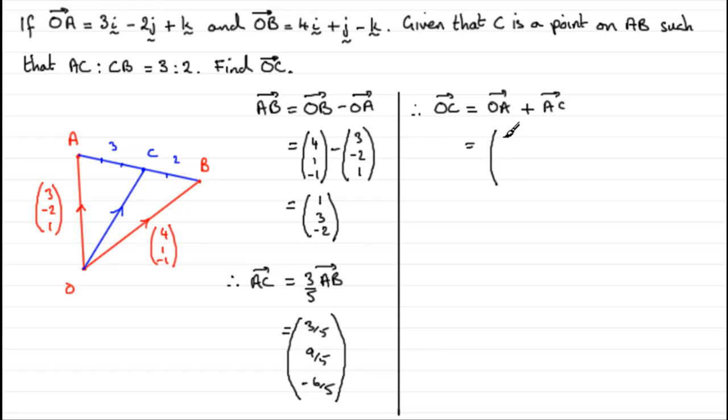Let's write that in, 3, minus 2, 1. And we've got to add it to our vector AC, which was 3 fifths, 9 fifths, and minus 6 fifths. And if you work this one out, you find that OC comes out at 18 fifths, minus 1 fifth, and another minus 1 fifth. So that gets us our vector OC. Or you could write this as 18 fifths i minus 1 fifth j, and then minus another fifth k.